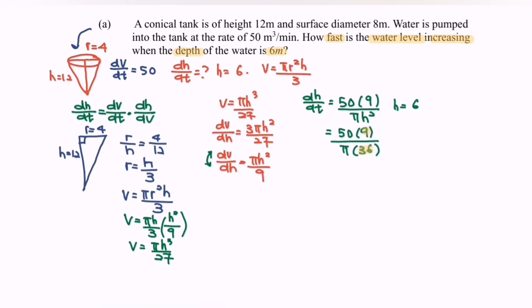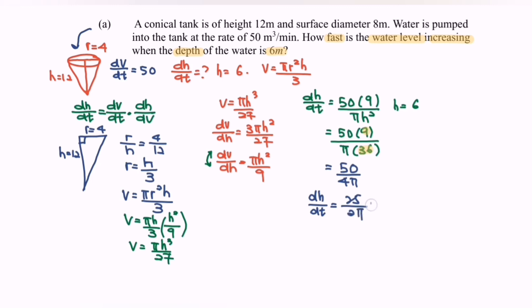Simplifying 9/36 = 1/4, we get dh/dt = 50 / (4π) = 25 / (2π) meters per minute.